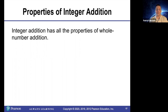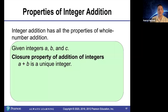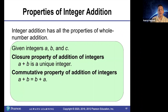Properties of integer addition. Integer addition has all the properties of whole number addition. For example, closure: if a, b, and c are integers, then a plus b is a unique integer. And a plus b is equal to b plus a — addition is commutative.